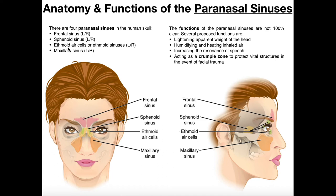If you compare these to the sphenoid sinuses, the ethmoid sinuses are actually more anterior. The best way to look at them is on a lateral view — these green ones right here are going to be your ethmoid air cells or ethmoid sinuses. They pretty much lie a little bit posterior to the frontal sinus but definitely inferior to it, kind of more or less around the eye, considering that's where the ethmoid bone is. They are air sacs or cells within the ethmoid bone, and they're the anterior one when you compare them to the sphenoid sinus.